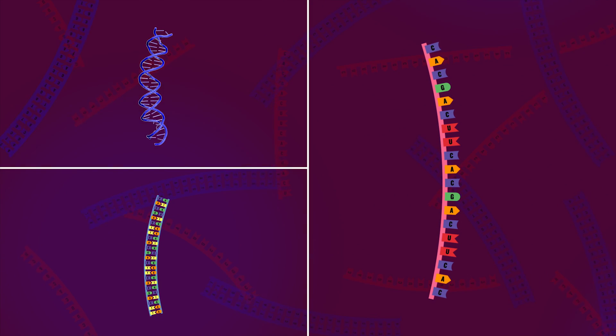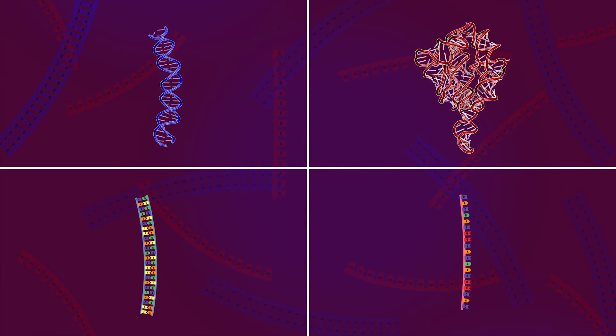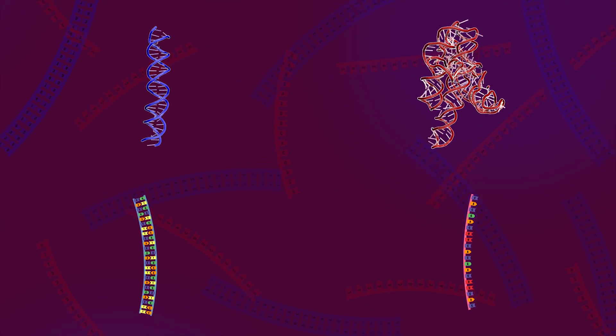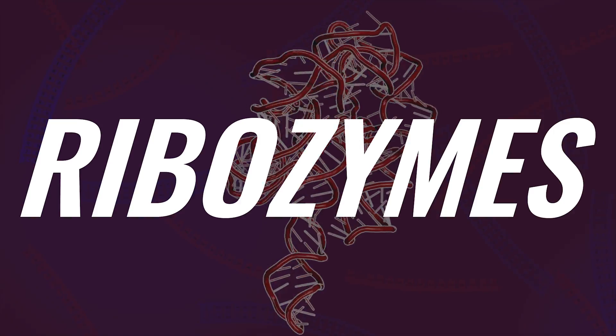double helix structure like DNA, but can create fairly complex shapes and act out enzymatic roles like protein. These RNA enzymes are called ribozymes.